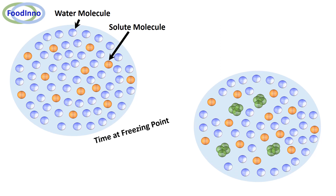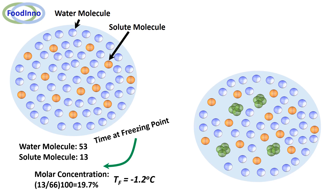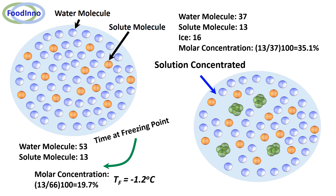In this solution at the time of freezing, water molecules are 53 and solute molecules are 13, giving a molar concentration of 19.7% and a freezing point of, for example, −1.2°C. After some time as freezing progresses, the solution becomes more concentrated: water molecules are 37, solute molecules are 13, and ice molecules are 16, giving a molar concentration of the solution phase of 35.1%.